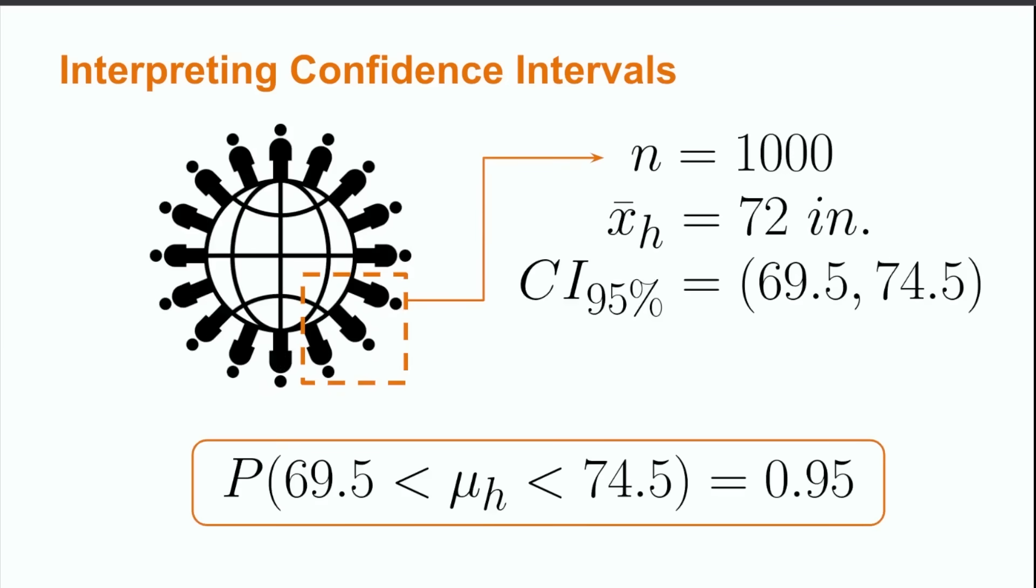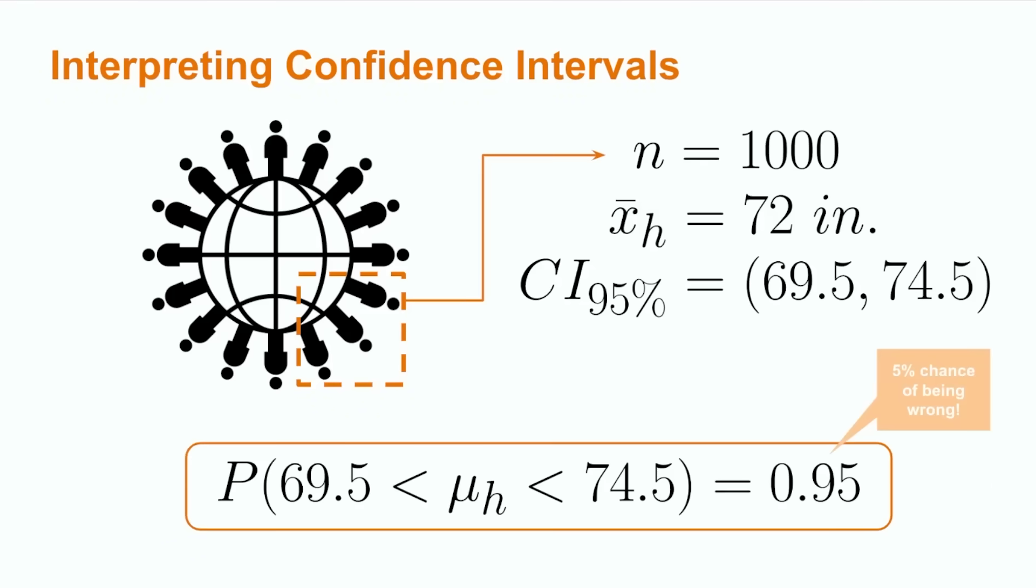Welcome back from taking a moment to think about this. In general, the only thing that we can say about the population parameter is that there is some probability that it lies within the confidence interval. We can write this as follows. The probability that 69.5 is less than mu h and that mu h is less than 74.5 is equal to 95%. Of course, this means that there is a 5% chance that the true average height of the population is outside of these limits.